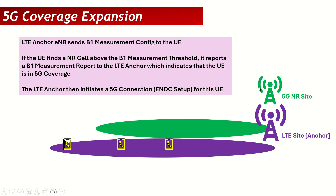Hi guys, it has been a long time since the last session so it is long overdue. Many of you have sent requests regarding different topics. One of them was the 5G coverage expansion, so in this session I will start with that. I will do multiple sessions on this topic, and the first one will cover the B1 threshold — let's understand that and see how we can optimize it to increase our 5G coverage.